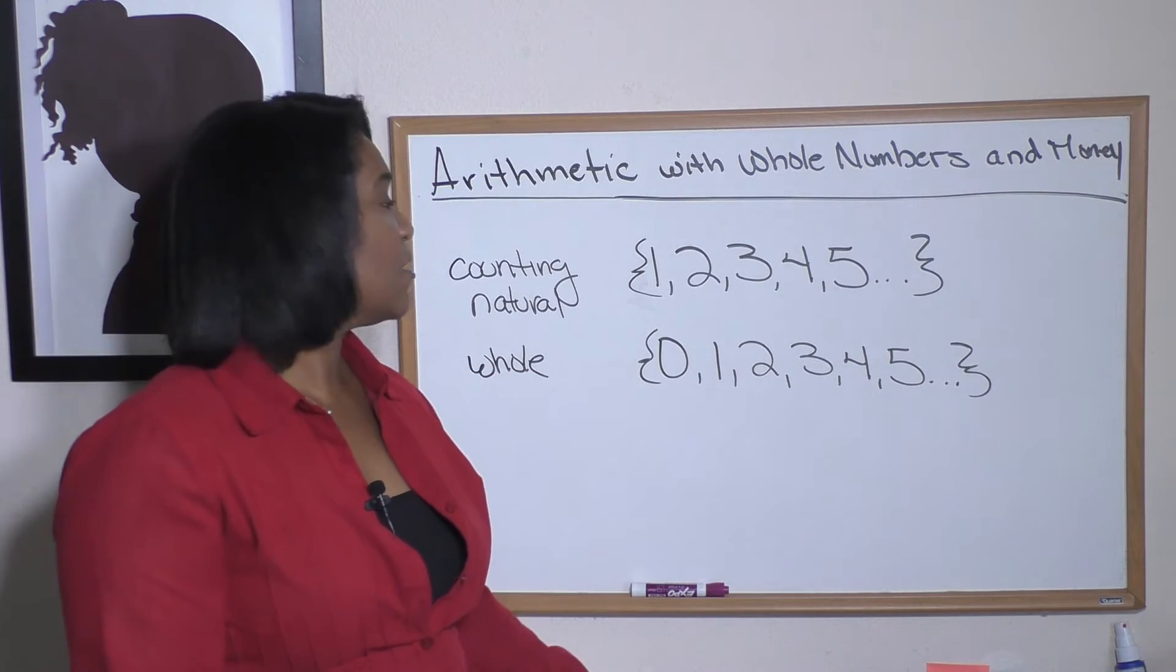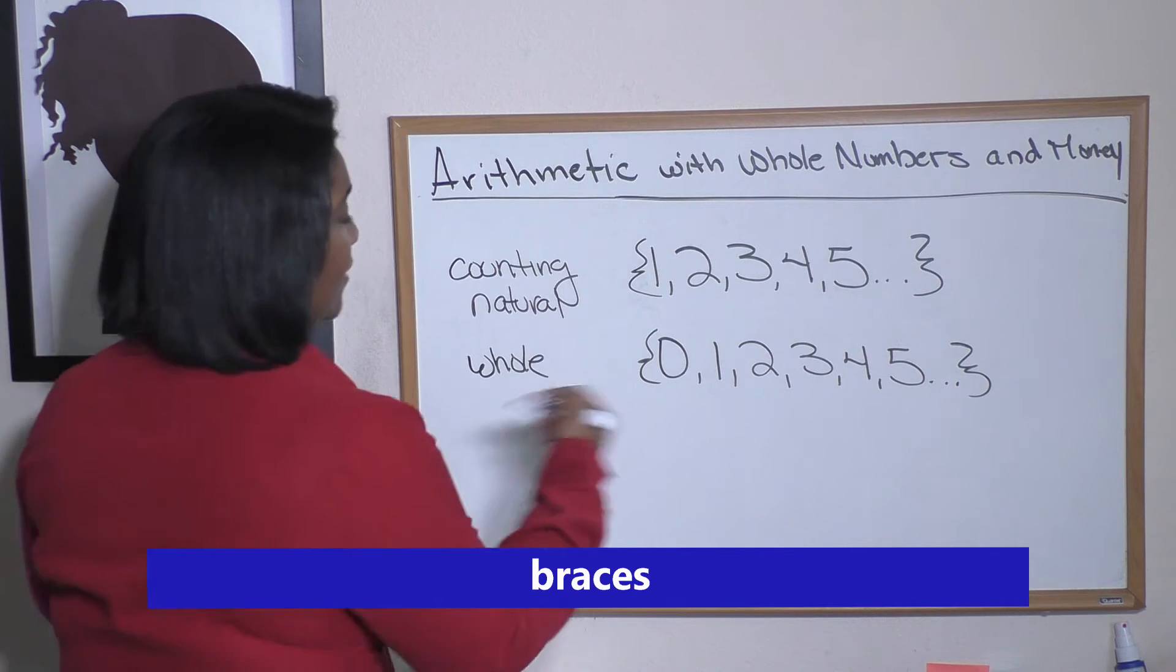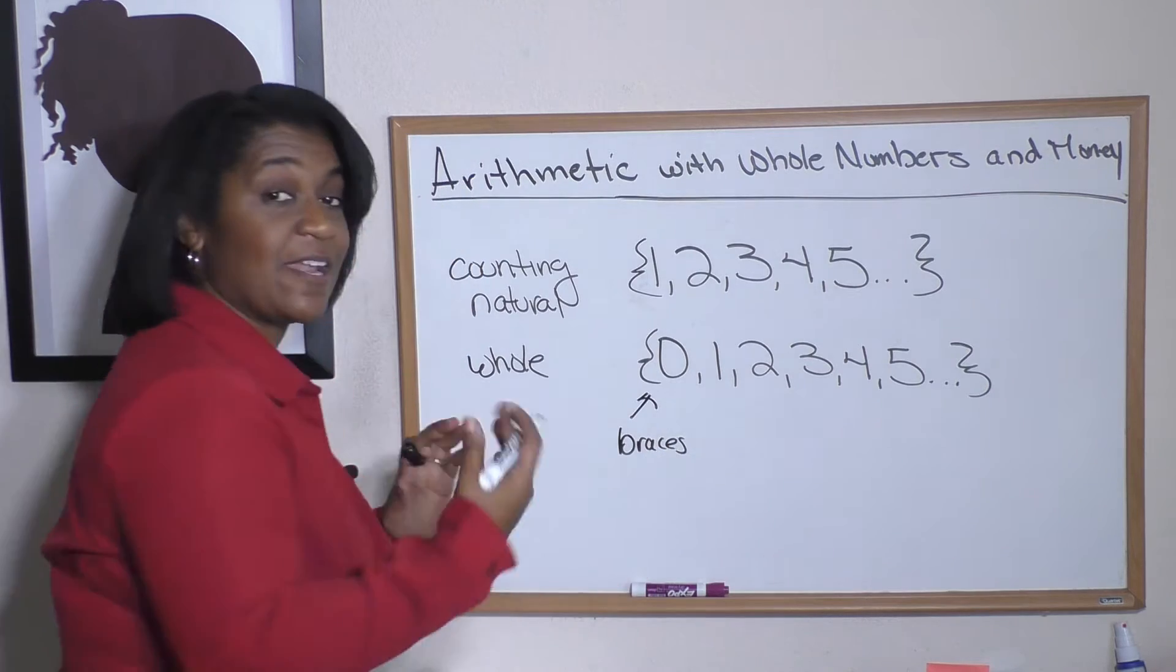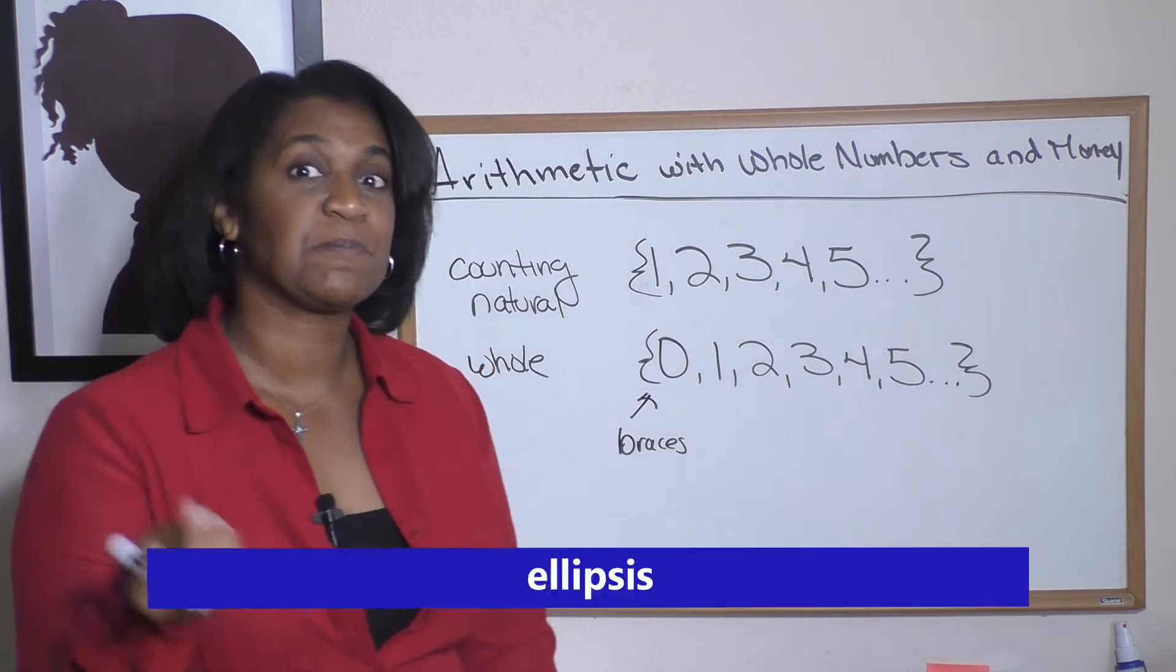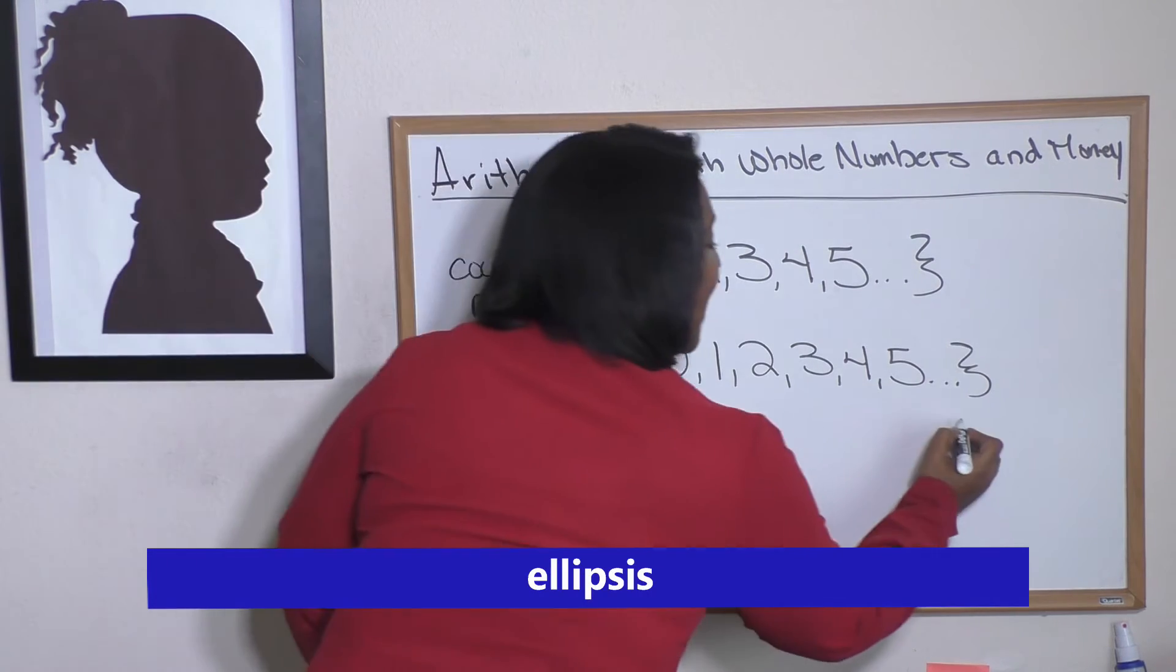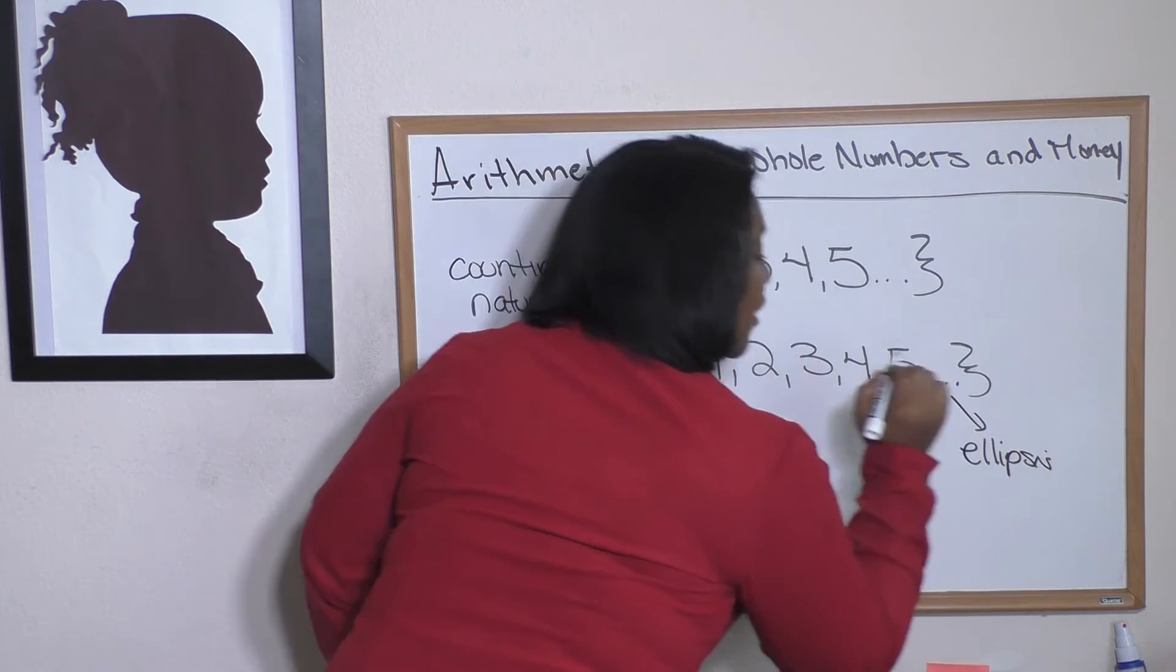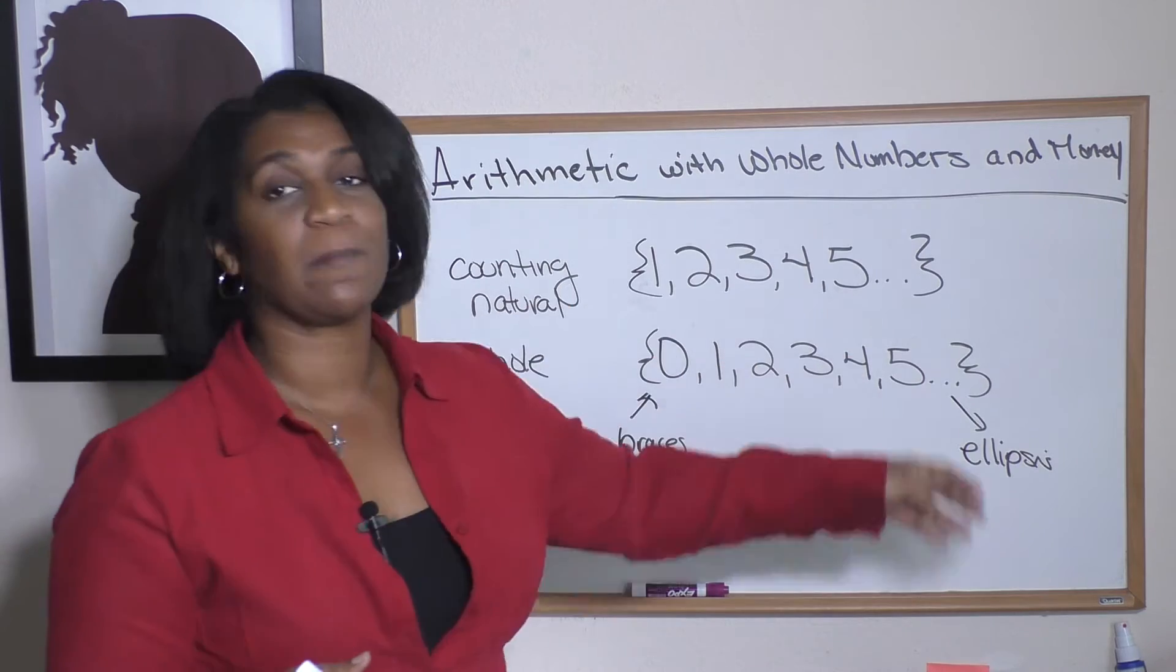Notice these little squiggly things around my set of numbers? Those are called braces, and that just tells us that we have a set of numbers. And then these three dots are called ellipsis, and those dot-dot-dot means that this set of numbers continues to go on. Those are some basic definitions.